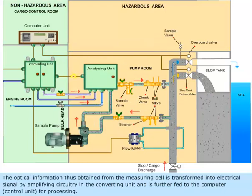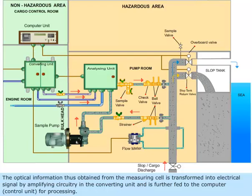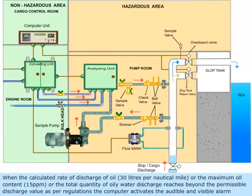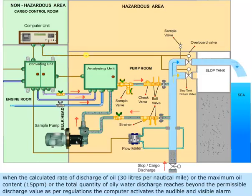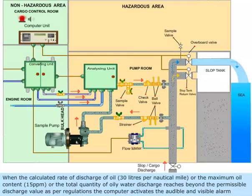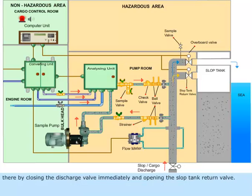The optical information obtained from the measuring cell is transformed into an electrical signal by amplifying circuitry in the converting unit and is further fed to the computer control unit for processing. When the calculated rate of discharge of oil reaches 30 liters per nautical mile, or the maximum oil content reaches 15 ppm, or the total quantity of oily water discharge exceeds the permissible discharge value as per regulations, the computer activates audible and visible alarms, immediately closing the discharge valve and opening the slop tank return valve.